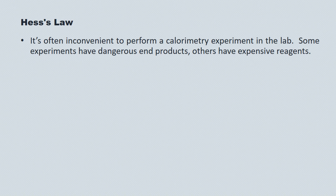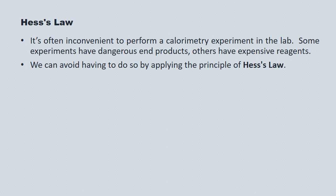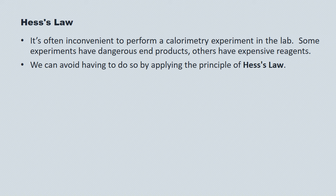Quite often it's inconvenient to run a calorimeter experiment in the lab. Reagents might not be available or could be expensive or dangerous and you might simply not have the time. To avoid having to do so, we apply a principle known as Hess's Law. We can use this law to determine the enthalpy of a reaction that we're not familiar with by adding together other reactions that essentially add up to the reaction we're looking at.